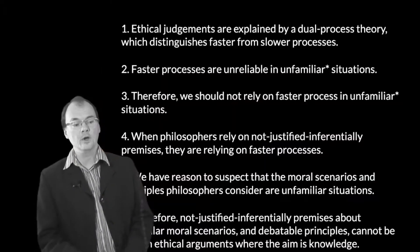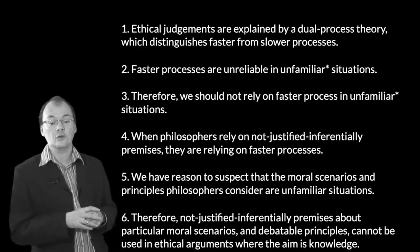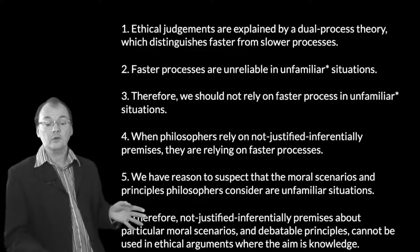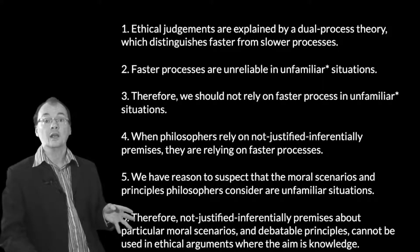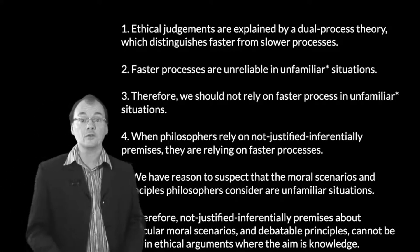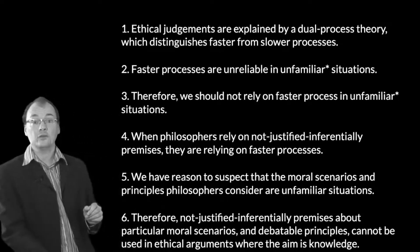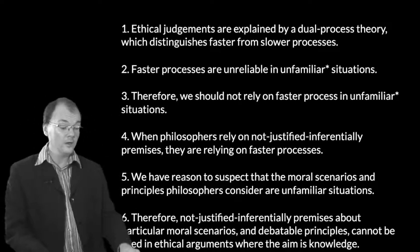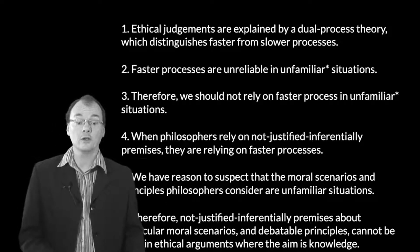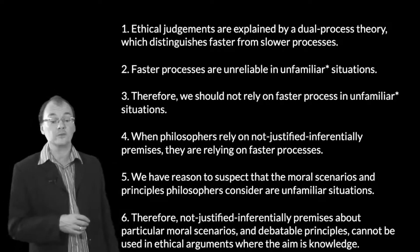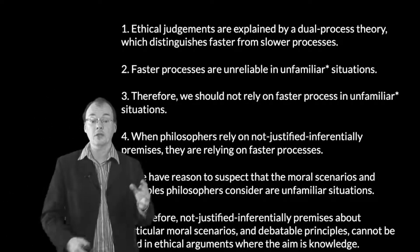Why are we doing this? Well, we have a loose reconstruction of Green's argument which has some quite dramatic implications for ethics. A lot of ethics relies on not-justified-inferentially premises, and this argument, if it's correct, shows that one can't do that insofar as the aim is to establish knowledge of a conclusion. Given that that has quite far-reaching implications, we ought to consider objections to the argument.